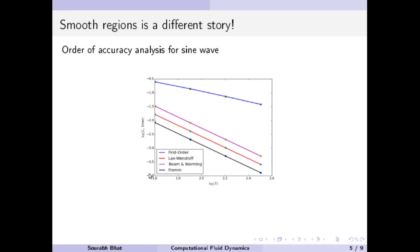I have plotted the log of L1 norm of error versus the log of the number of cells in the domain. As expected, as the number of cells are increased the error drops. However, for a first order method the slope on this curve — log of error versus log of cells — is equal to 1.